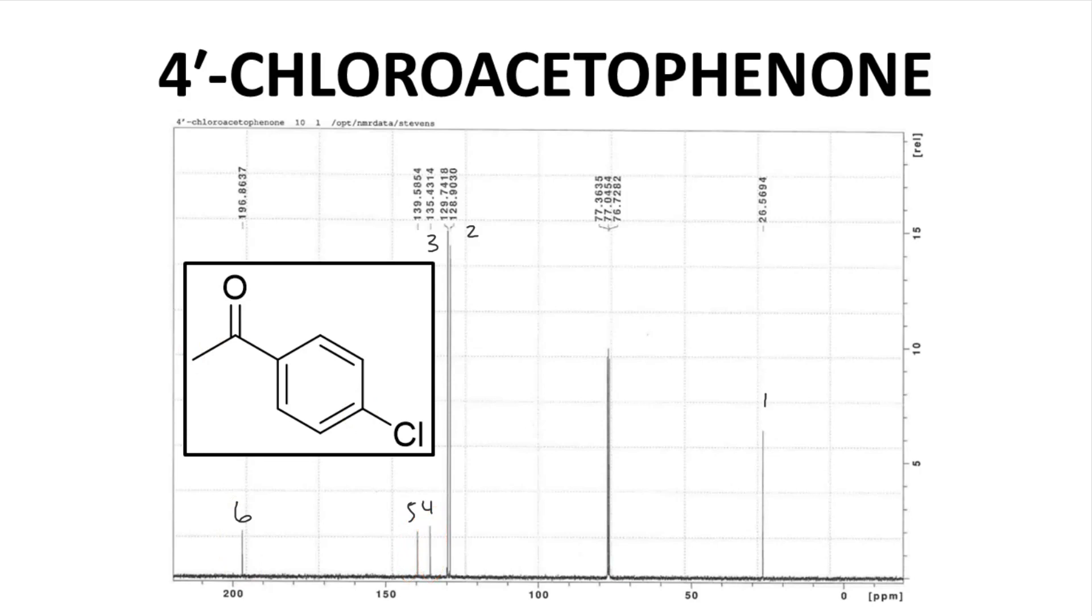The ketone carbon stands out. Ketone signals give among the most downfield signals in the C13 spectrum, and this ketone is close to 200 ppm. All the aromatic ring carbons are around 130 to 140 ppm.